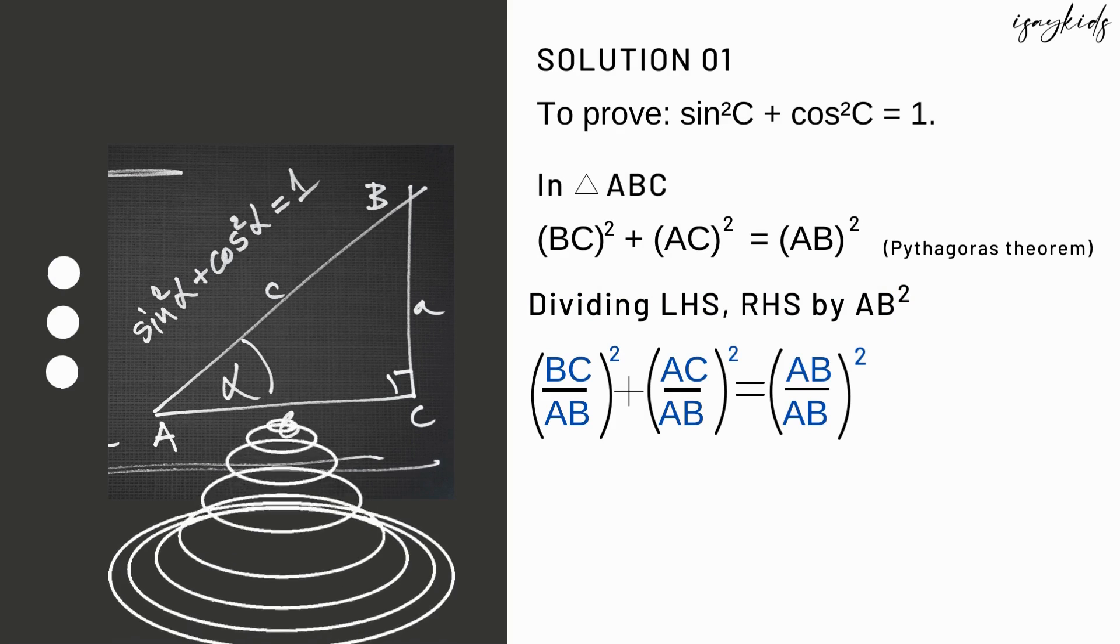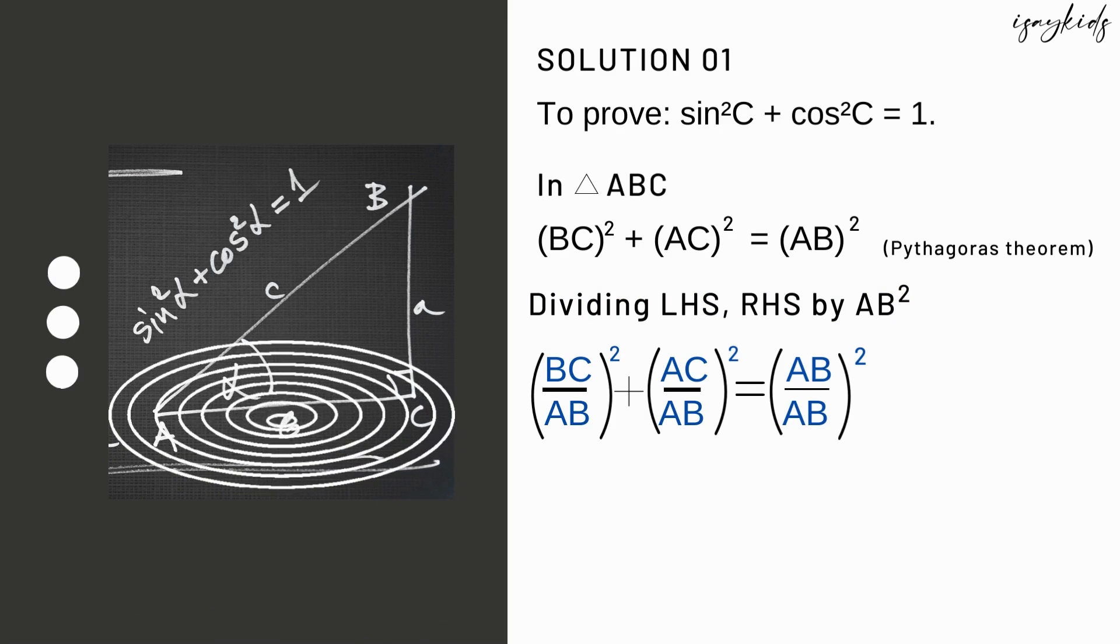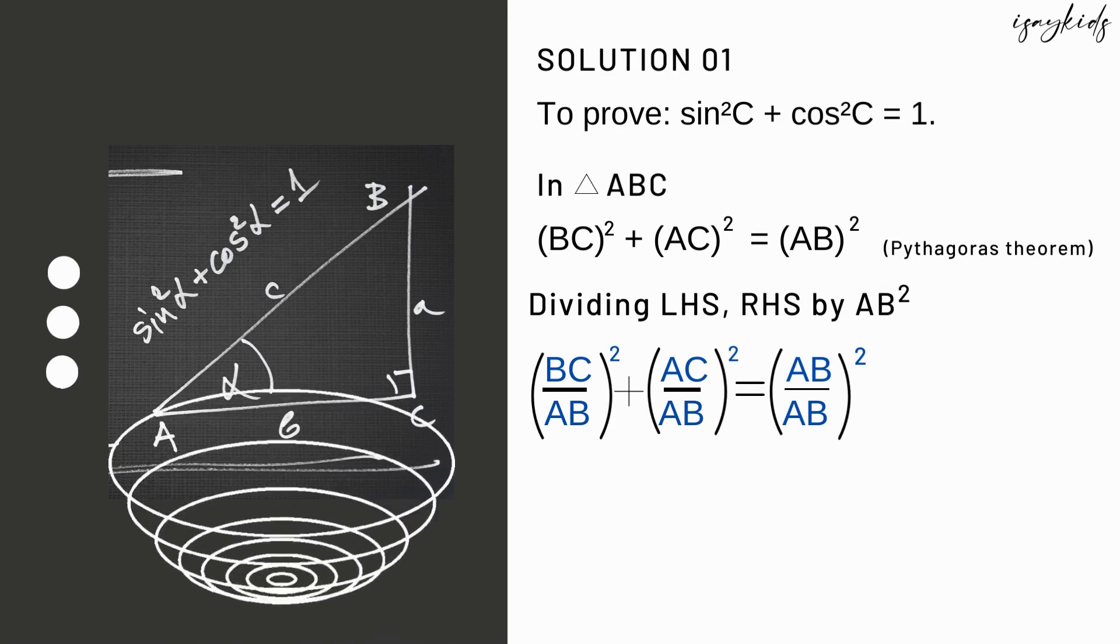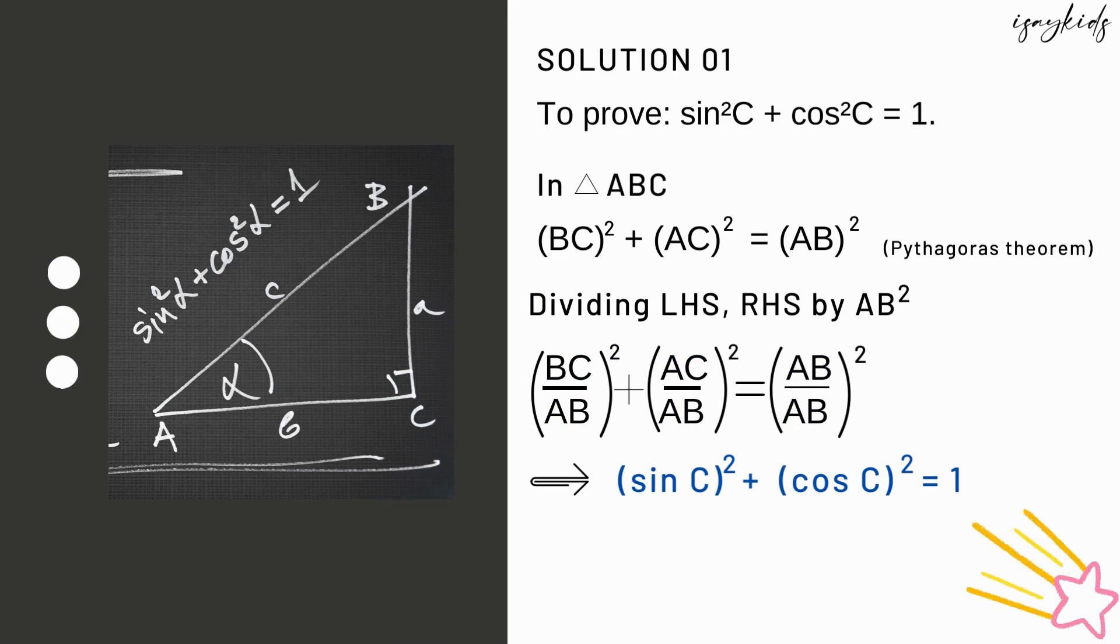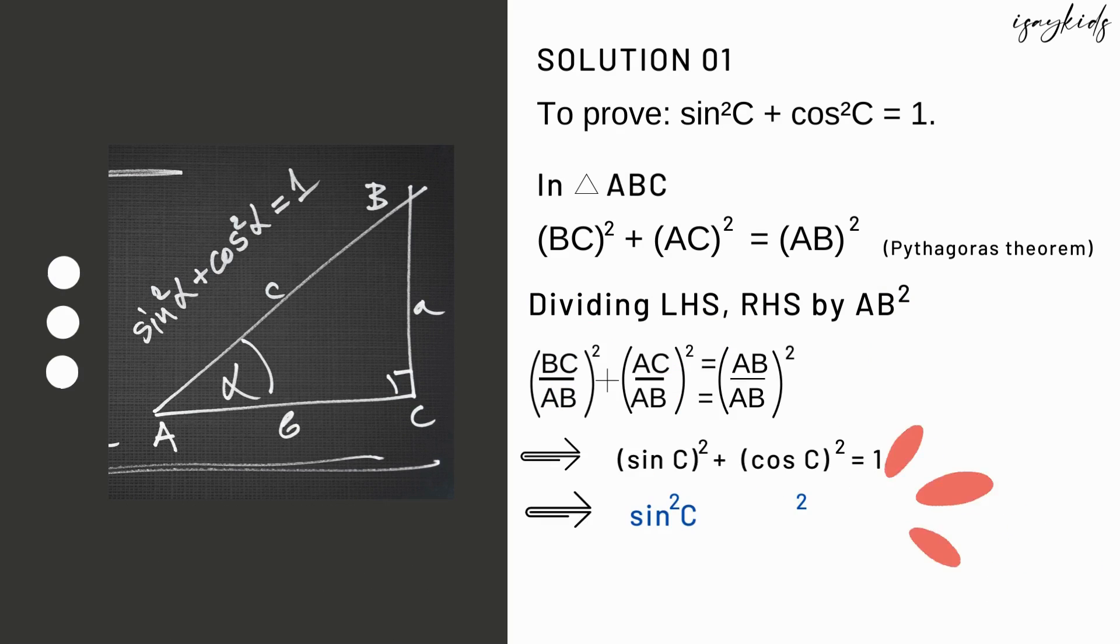We get (BC/AB)² + (AC/AB)² = (AB/AB)². This means sin²C + cos²C = 1.